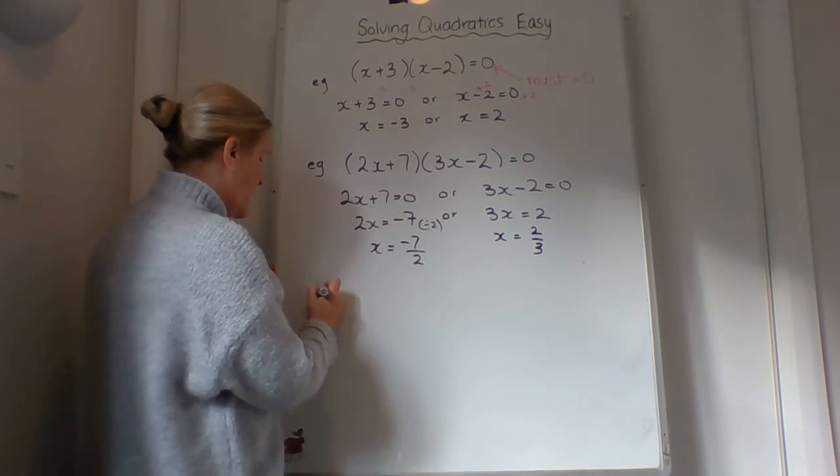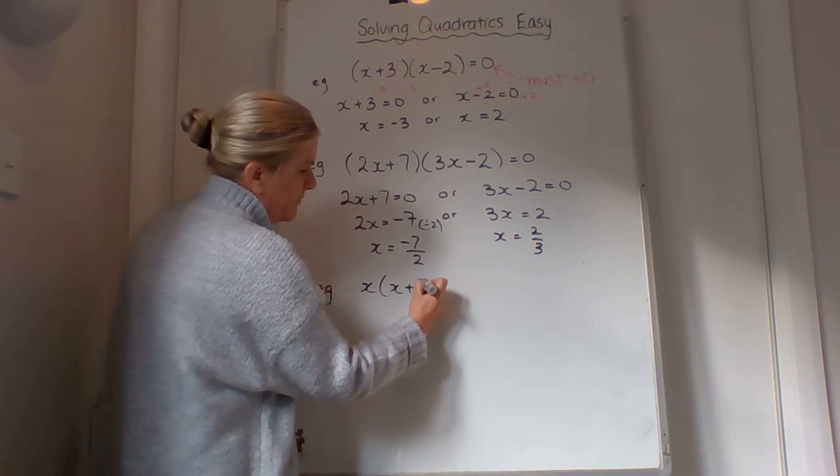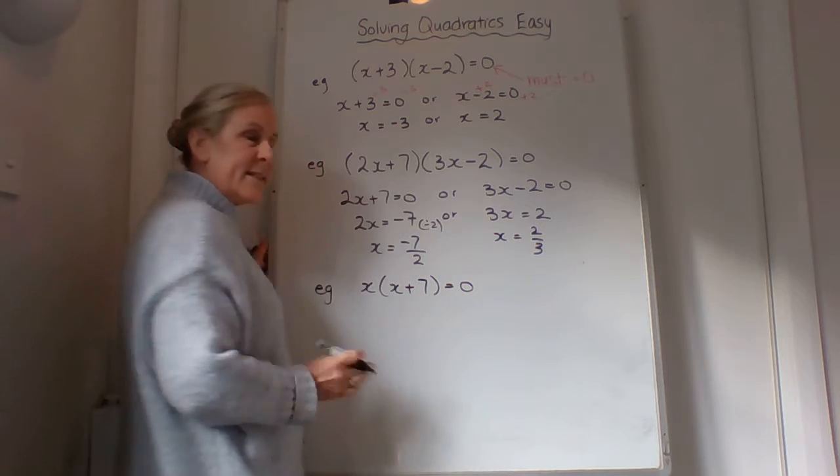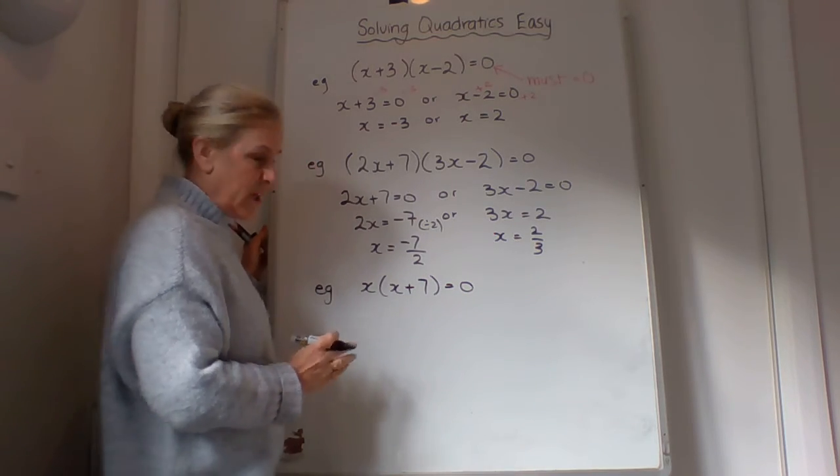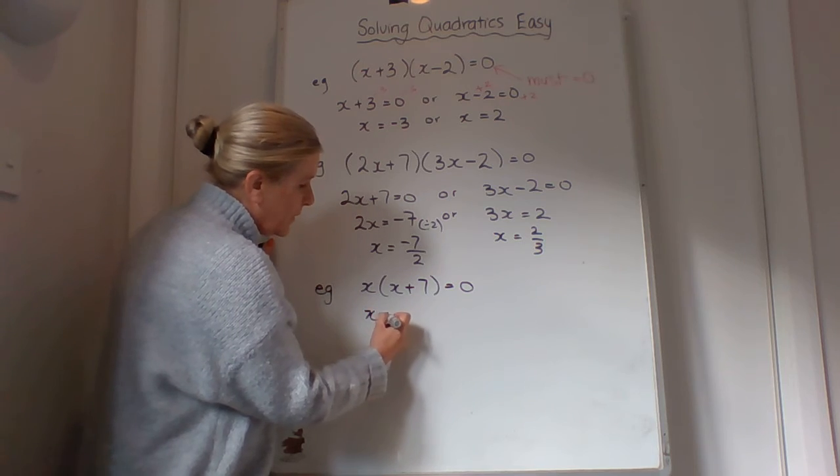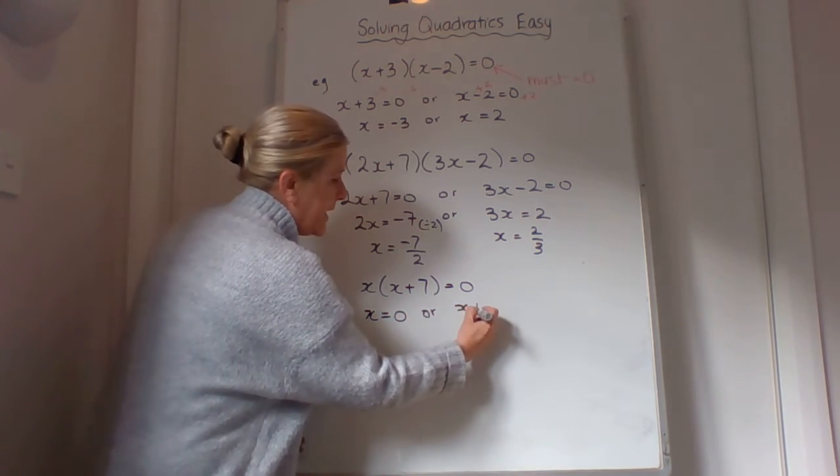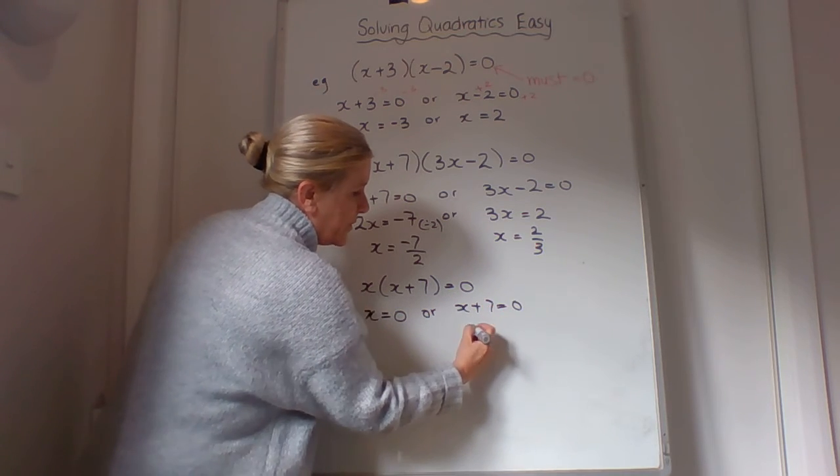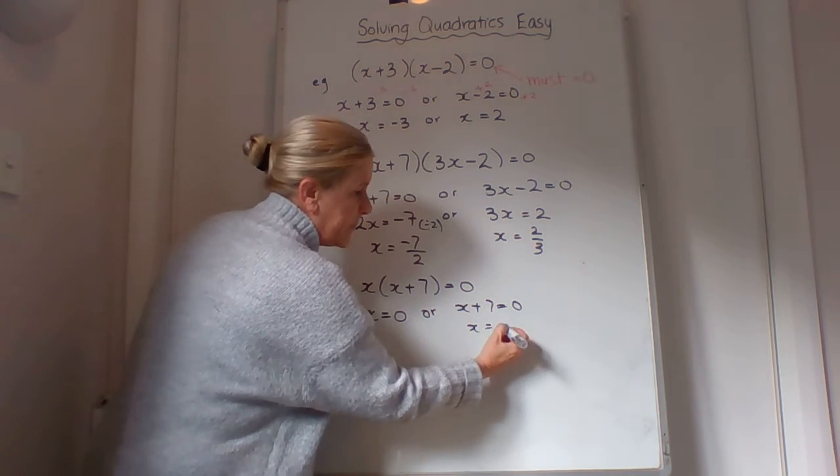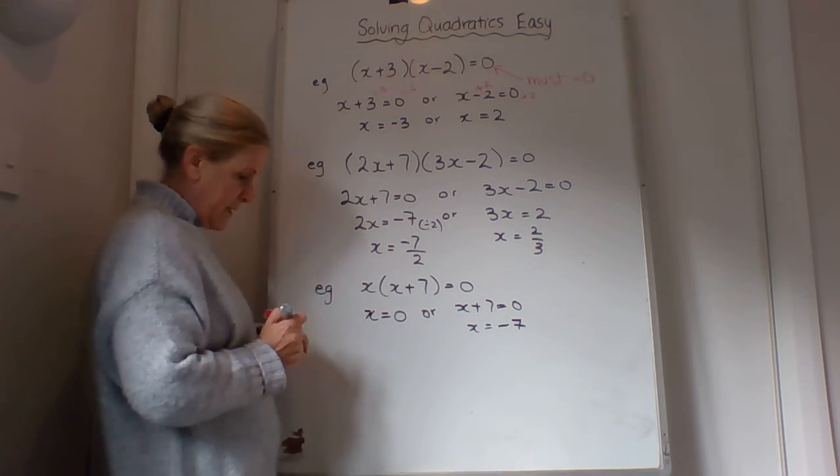Now one other thing that can happen is this: x(x+7) = 0. This is still the same situation. It's this times this. So it's either x = 0, done, or x+7 = 0. So x equals, take away 7 from both sides, x = -7. All right, so watch for this one.